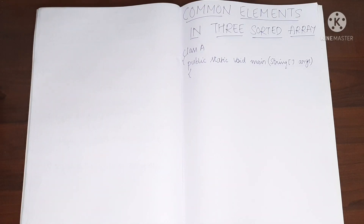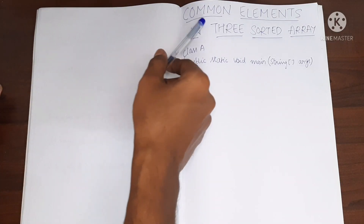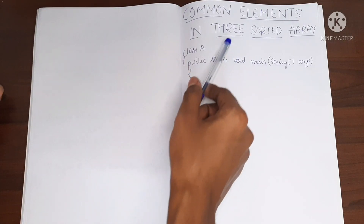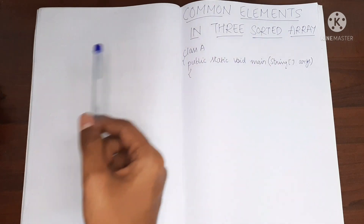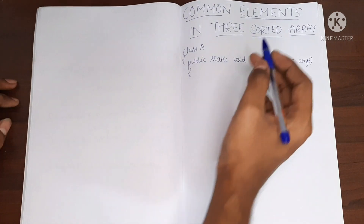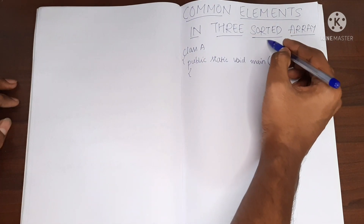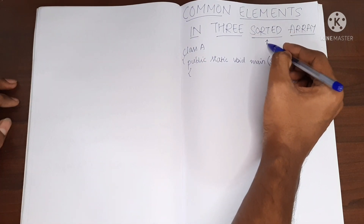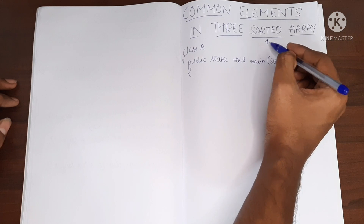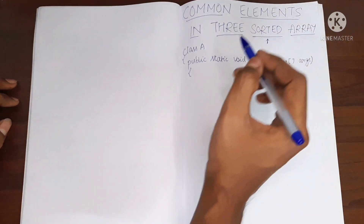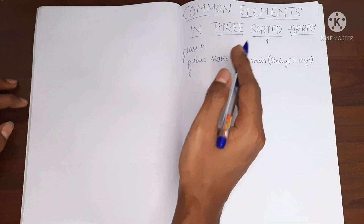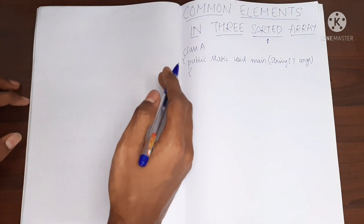Hello, in this video I will teach you how to find common elements in three sorted arrays. The fact that the arrays are sorted, we can use this to our advantage to make the program more efficient.